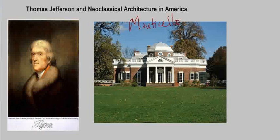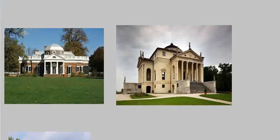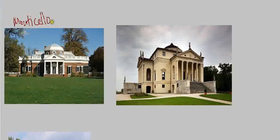This is Monticello. It was built over the course of many years, from about 1770 to 1809, and is located in Virginia. Again, it was his home.